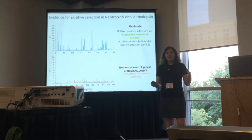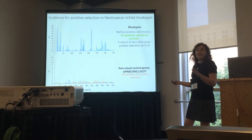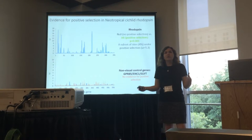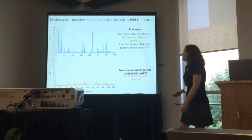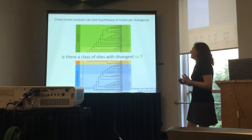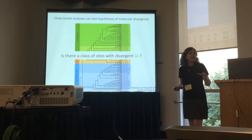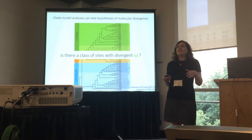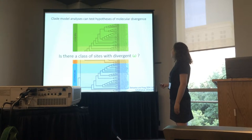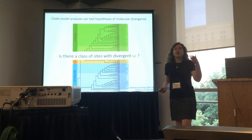Usually these analyses of positive selection focus on random sites panel models that look at whether you see pervasive positive selection across your gene of interest. But in large macroevolutionary data sets like the one I have, we can also ask more complicated questions. We can use models called clade models that can test other hypotheses about molecular divergence.